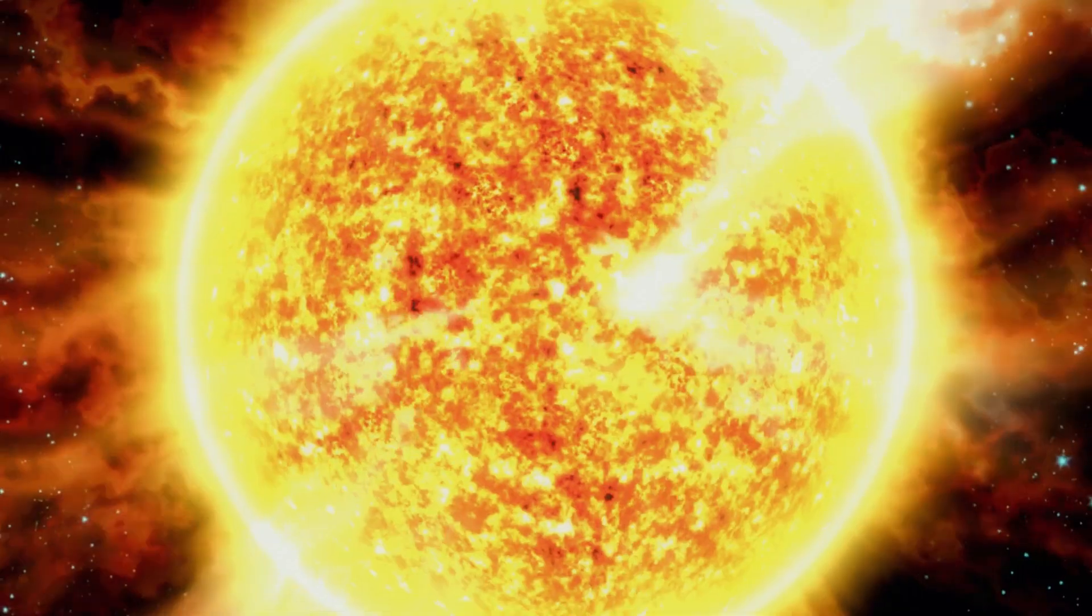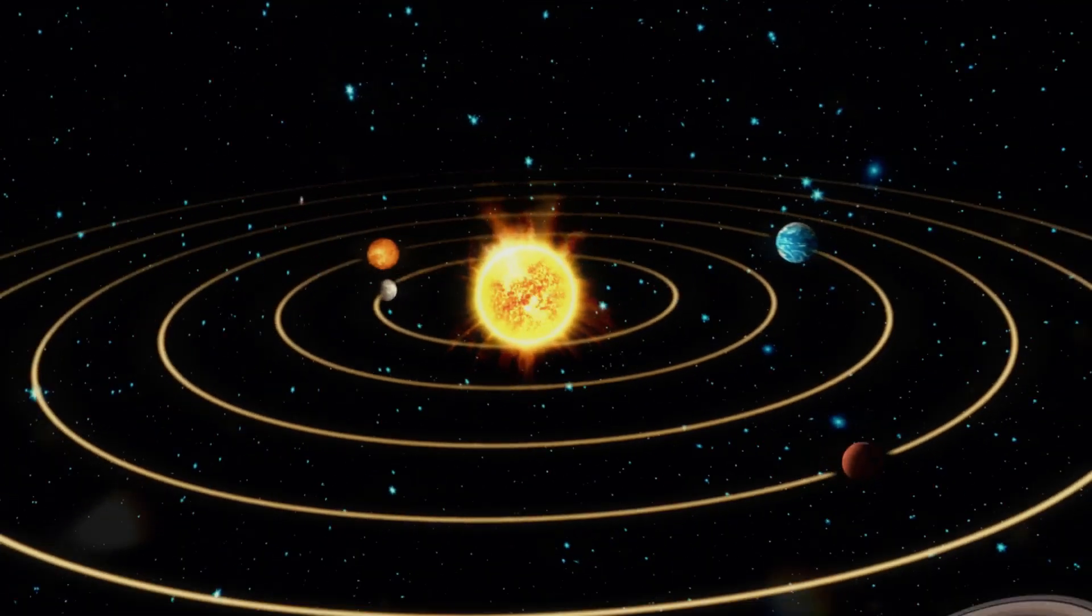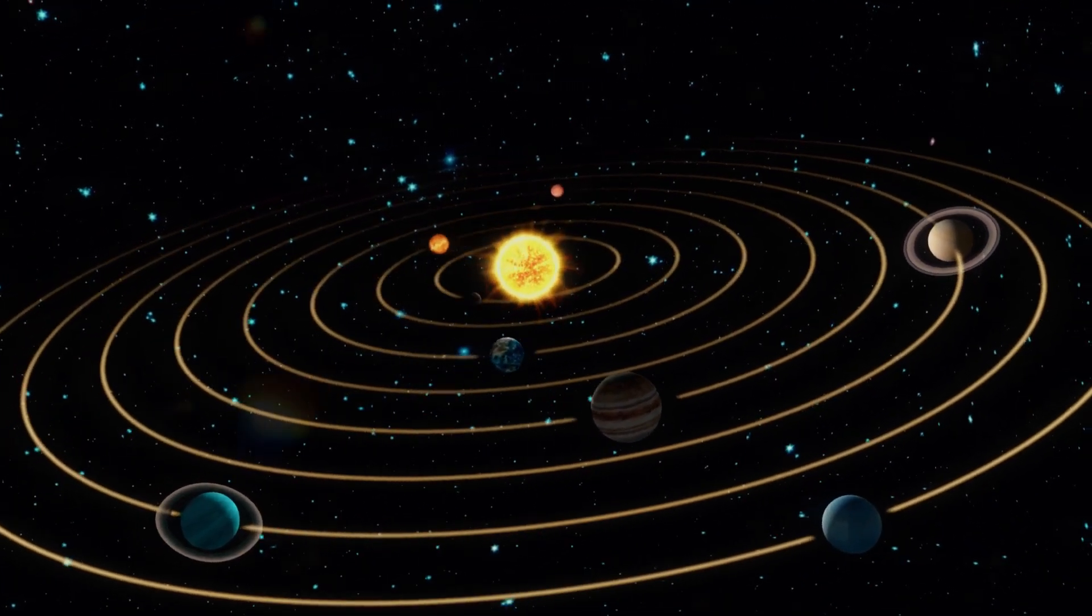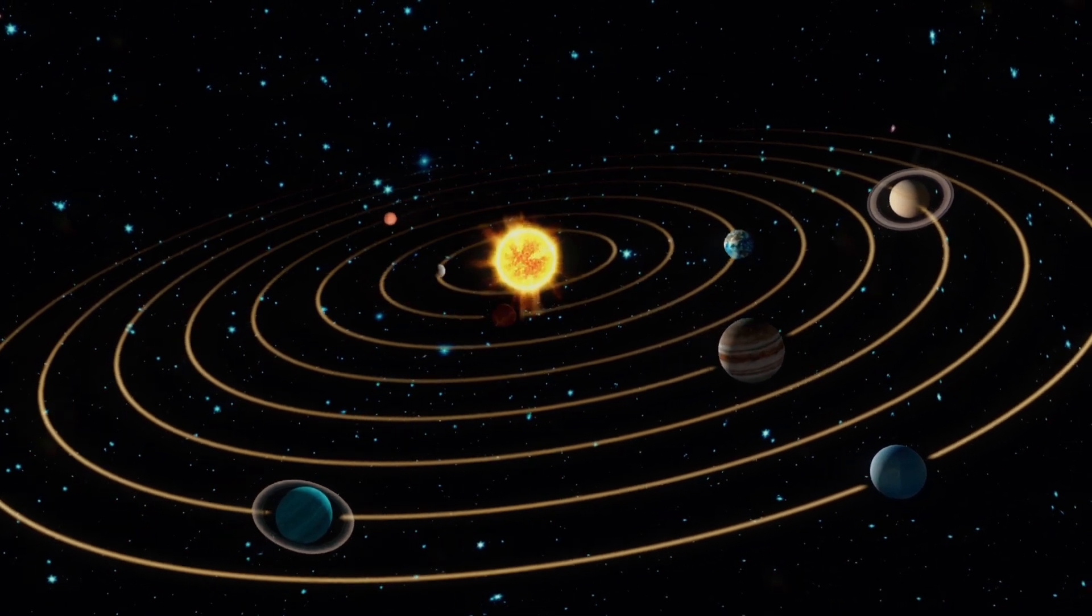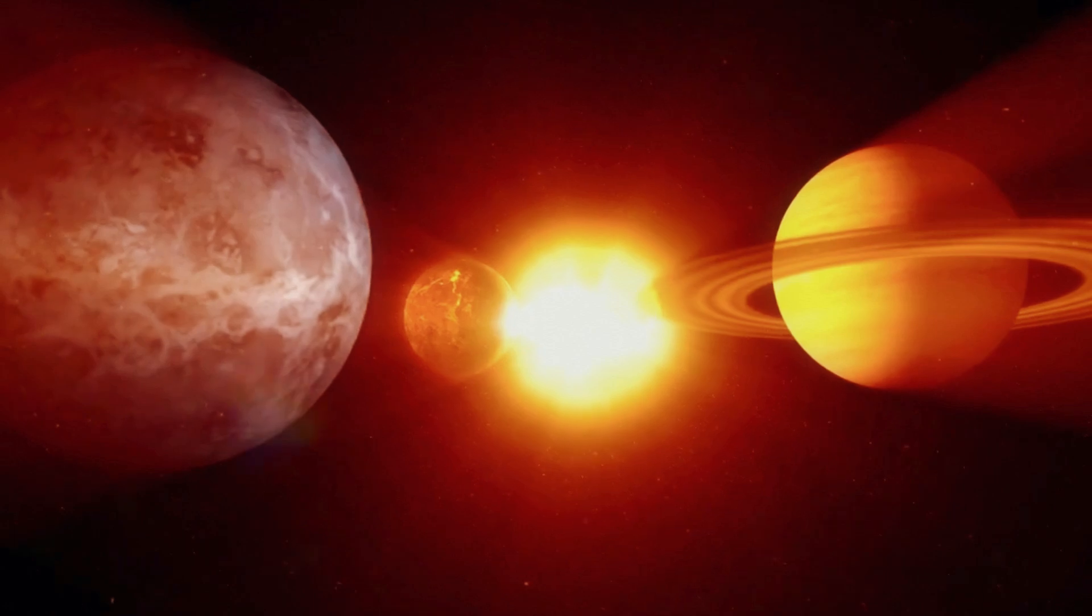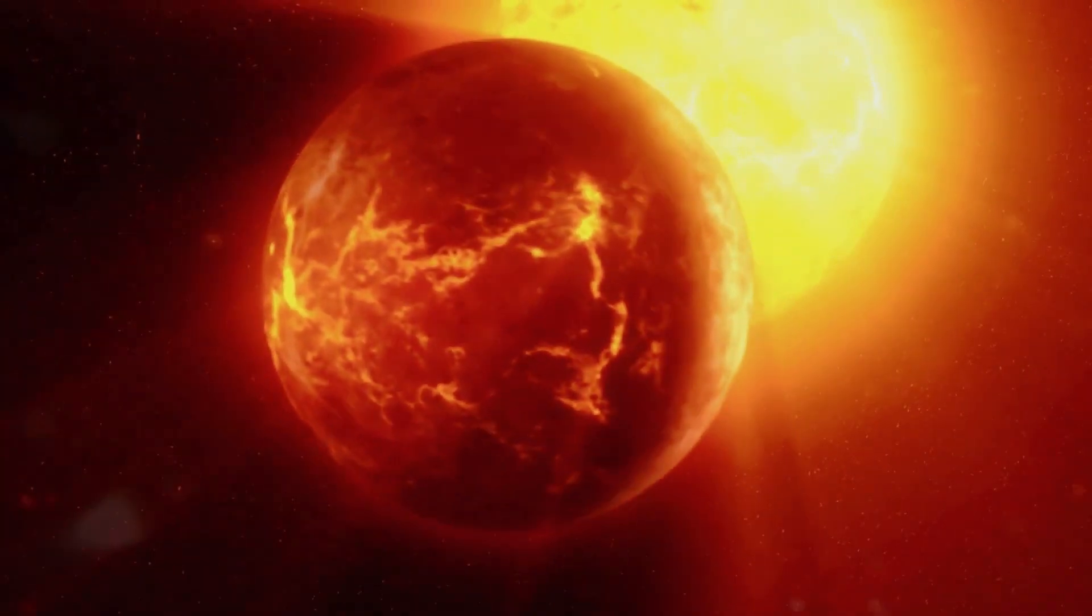Instead, gravitational forces tug at solar systems, potentially flinging them into new orbits or even ejecting them entirely from the galaxy. But what happens to planets like ours, delicately balanced in the gravitational pull of the sun? A cosmic impact of this magnitude could have drastic consequences for the stability of entire star systems.